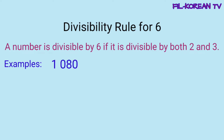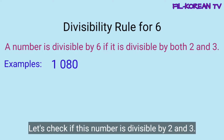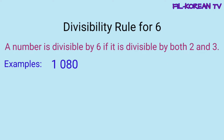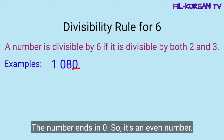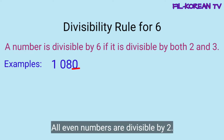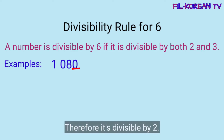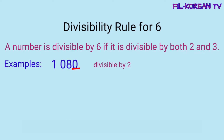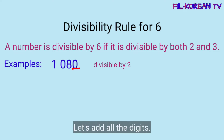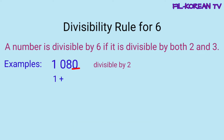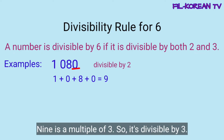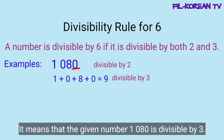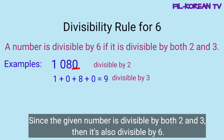Examples, 1080. I-check natin kung ang number na ito ay divisible ng 2 at divisible ng 3. Ang number ay nagtatapos sa 0, ito ay even number. So, lahat ng even number ay divisible ng 2, kaya naman ito ay divisible by 2. Ngayon, i-check din natin kung ito ay divisible by 3. I-plus natin ang lahat ng digits: 1 plus 0 plus 8 plus 0 equals 9. Yung sum na 9 ay multiple ng 3. So, divisible by 3 itong 9. Ibig sabihin, yung given number na 1080 ay divisible by 3. At dahil yung given number ay divisible pareho ng 2 at 3, automatic ito ay divisible by 6.